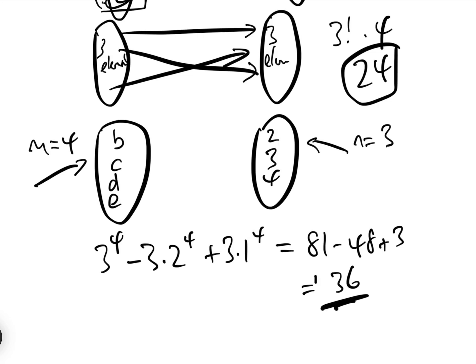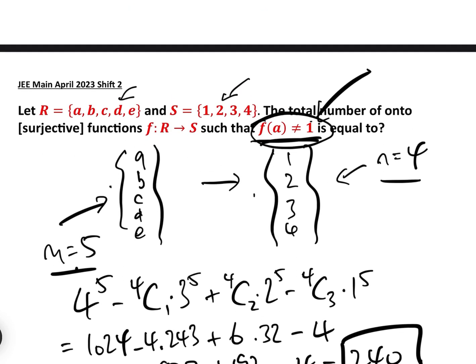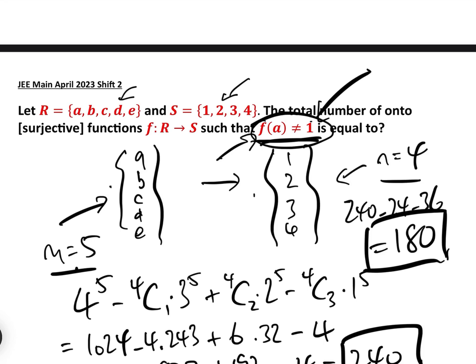So we have 36 cases where A maps to 1 and the others do not, and 24 cases where A maps to 1 and one other also maps to 1, giving 60 total surjective functions where A maps to 1. Therefore the answer — the total number of onto functions where A does not map to 1 — is 240 − 24 − 36 = 180. This requires careful thinking, and in the next video we'll look at bijective functions, including surjective functions where domain and codomain are the same size.